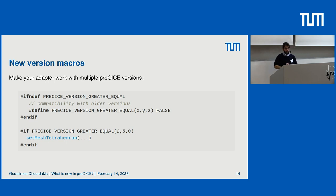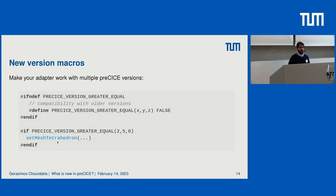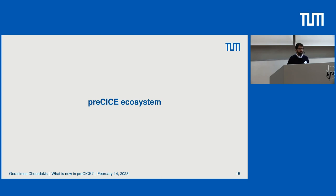Something you should start using, especially as we move to a new breaking release, is version macros that you can put in your adapter to enable or disable features depending on the Precise version, or to change how you call methods. This way, you could allow your adapter to work with both version 2 and version 3. For example, you can only enable Linear Cell Interpolation — where you need to set mesh tetrahedra — if you have a version greater than or equal to 2.5.